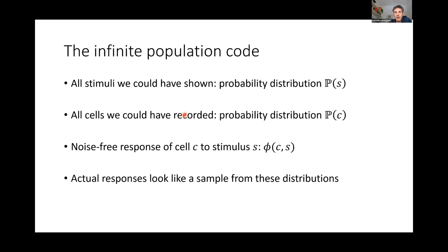On stronger requirements: if you assume second derivatives have to be continuous, that would require decay faster than n to the minus (1 + 4/d). For third derivatives it's (1 + 6/d), and so on. For infinitely differentiable, the spectrum has to be faster than any power law — something like exponential decay.